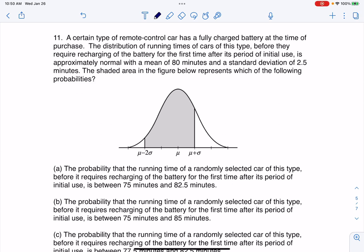Hey everyone, let's see if we can figure out multiple choice number 11. So it says a certain type of remote control car has a fully charged battery at the time of purchase. The distribution of running times of cars of this type before they require recharging of the battery for the first time after its period of initial use is approximately normal with the mean of 80 minutes and a standard deviation of 2.5 minutes.